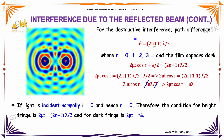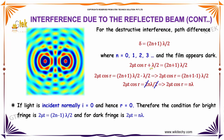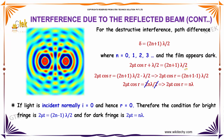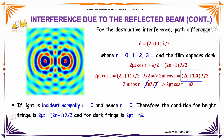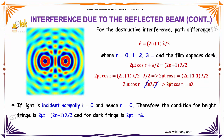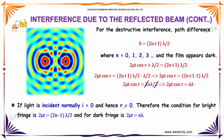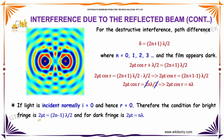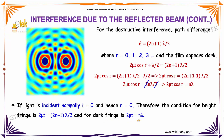For destructive interference, the path difference is (2n plus 1) into lambda by 2, where n equals 0, 1, 2, 3, and the film appears dark. So 2 mu T cos r plus lambda by 2 equals (2n plus 1) into lambda by 2. Solving by moving lambda by 2 and cancelling, we get 2 mu T cos r equal to n lambda. If light is incident normally, i equals 0 and r equals 0, so cos r equals 1. The condition for bright fringe becomes 2 mu T equal to (2n minus 1) lambda by 2, and for dark fringe, 2 mu T equal to n lambda.